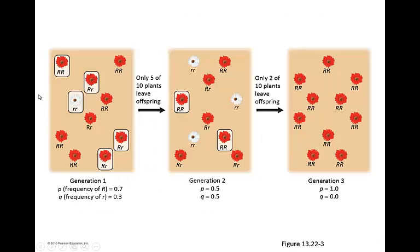In this particular example, I've got red and white flowers, and you can see that the red flowers are quite a bit higher percentage than the white flowers. There are also a large number of heterozygotes in the population. So in the first generation, P would be 0.7 and Q would be 0.3.